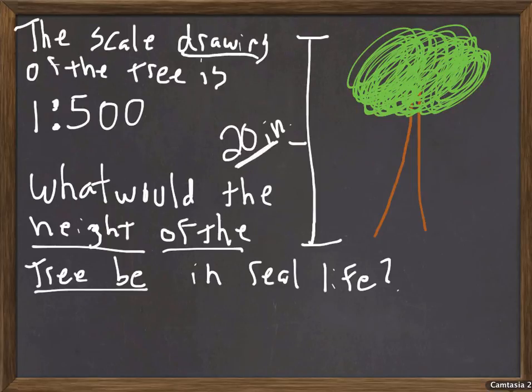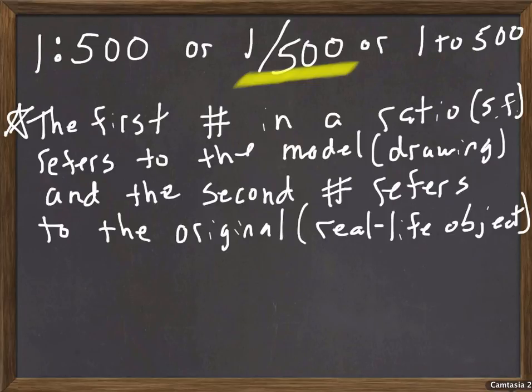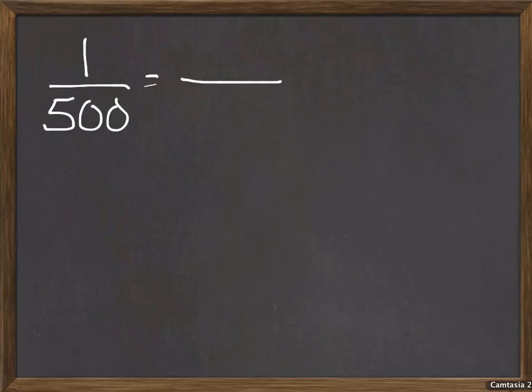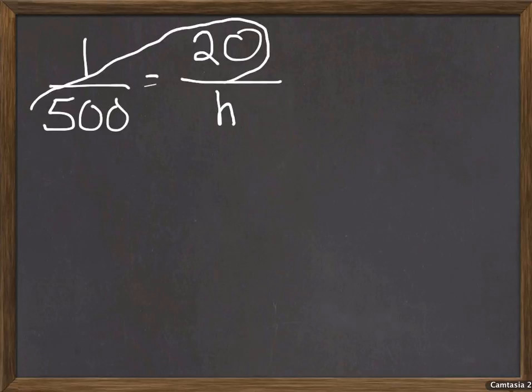Now somewhere there's going to be an x to represent our real height of the tree. You can let that be h if you want to represent height. I need this number. Now you got to keep in mind this is a drawing. Now if I look at my rule, the top number, the first number in a ratio refers to the model or drawing. Since I have that number, I'm going to put that first, that is my top number.